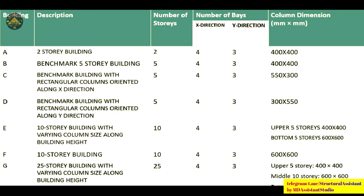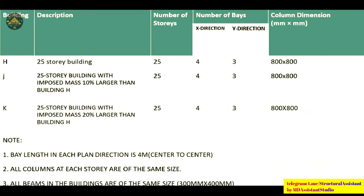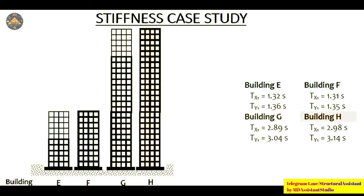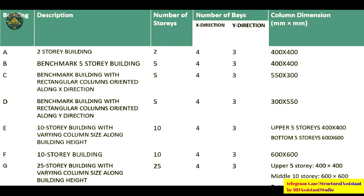The sixth case is a 10-story building with all columns the same size — 600 by 600. The seventh case is a 25-story high-rise building with varying column size: upper 5 stories are 400 by 400, middle 10 stories are 600 by 600, and bottom 10 stories are 800 by 800. The eighth is a 25-story building with all same-size columns. The ninth case is a 25-story building with imposed mass 10% larger than building H, and K is the same building with 20% larger mass than building H.